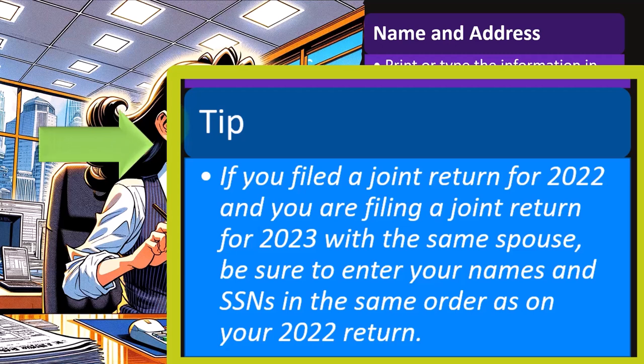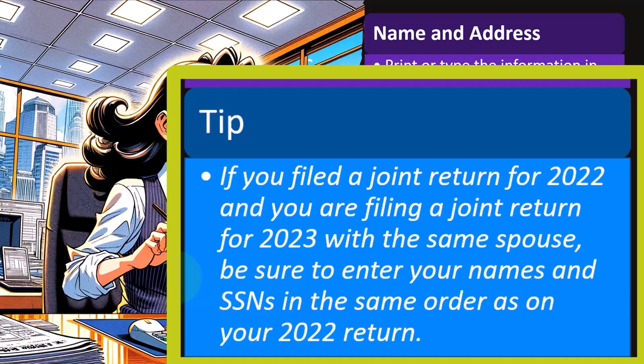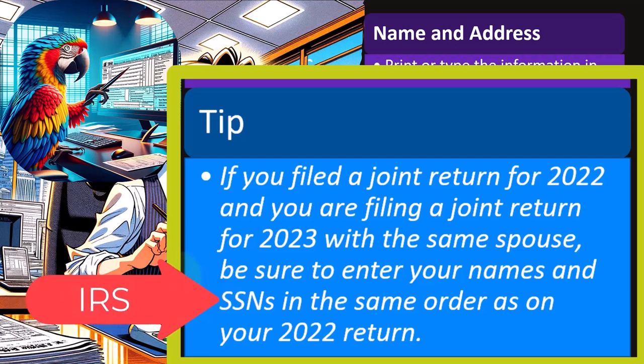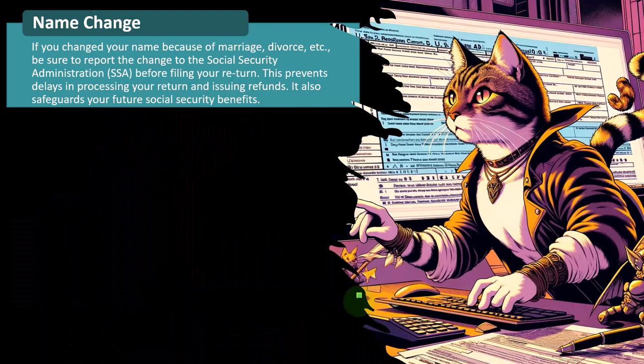Tip: if you filed a joint return for 2022 and are filing jointly for 2023 with the same spouse, be sure to enter your names and Social Security numbers in the same order as on your 2022 return. Traditionally the husband is listed as primary taxpayer and the spouse second. If you flip that order in a following year, you'll confuse the IRS, which typically causes delays and problems — so keep the ordering consistent from year to year.